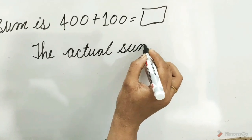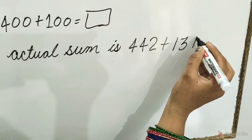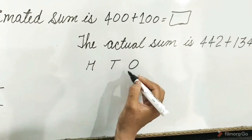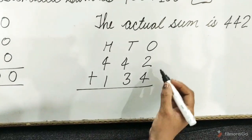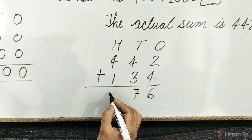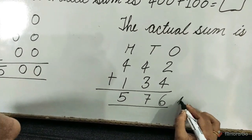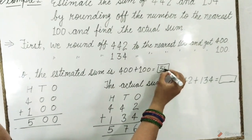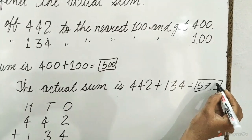Now the actual sum is 442 plus 134 is equal to what? Write hundreds, tens, ones: 4 plus 2 is equal to 6, 3 plus 4 is equal to 7, 4 plus 1 is equal to 5. So children, the actual sum is 576 and the estimated sum is 500. Write in the box: 500 and actual sum 576.